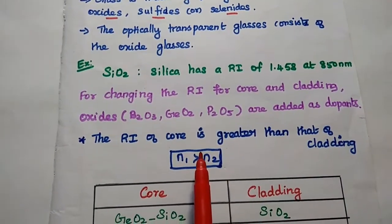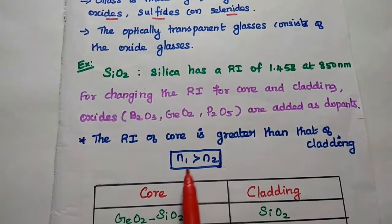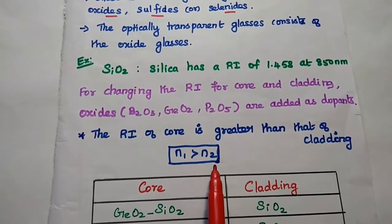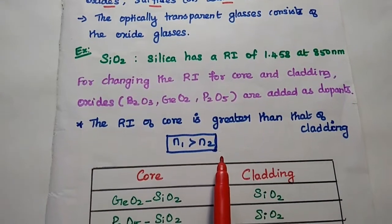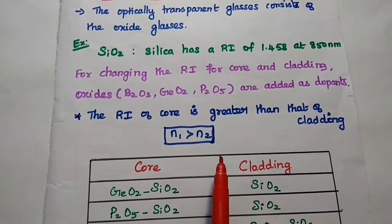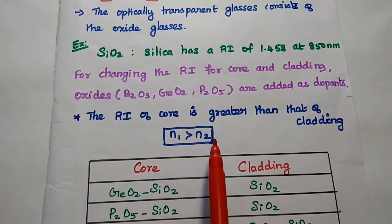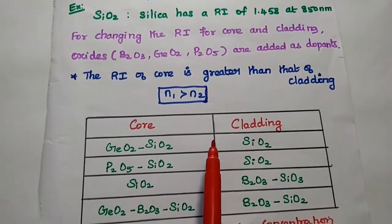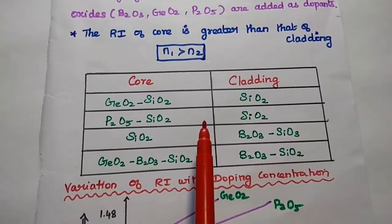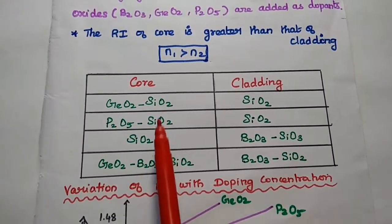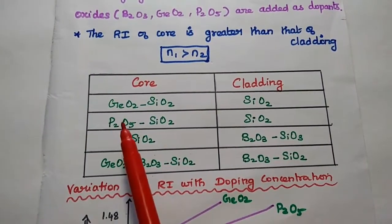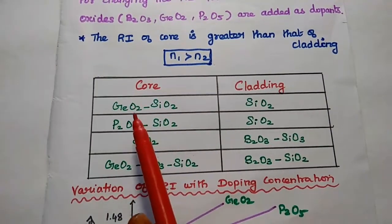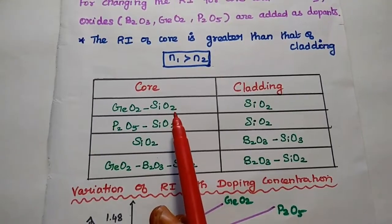So here we know that the refractive index of the core is always greater than the refractive index of the cladding for better optical transmission. So we are going to change the refractive index for core and cladding by adding the oxides to the silicon dioxide. So here few examples are given here. If you want to increase the refractive index of the core, we have to add this germanium dioxide with this silicon dioxide.